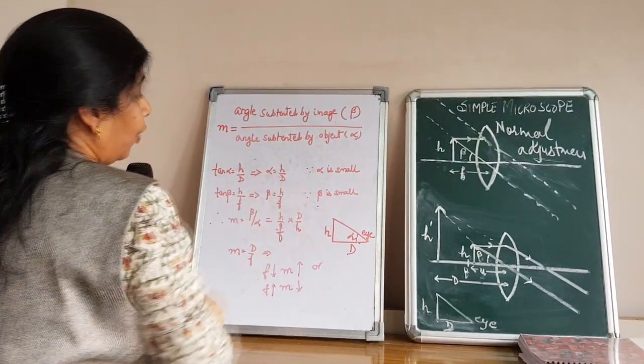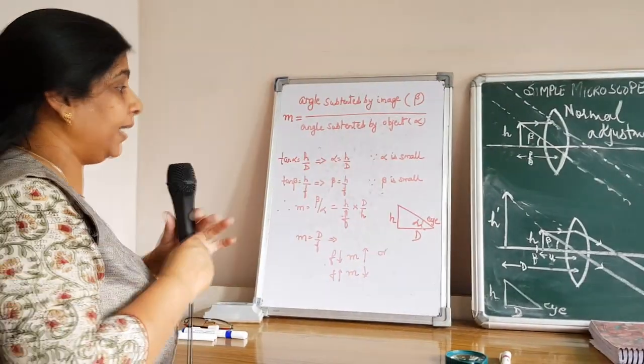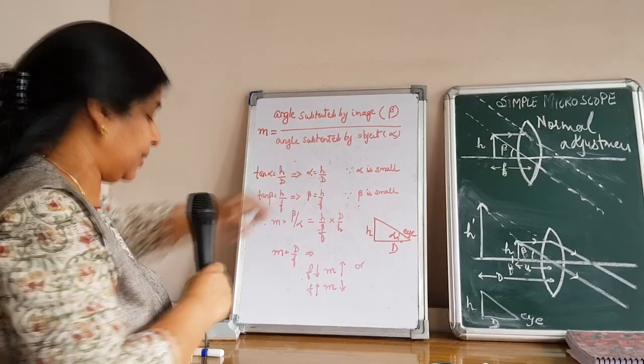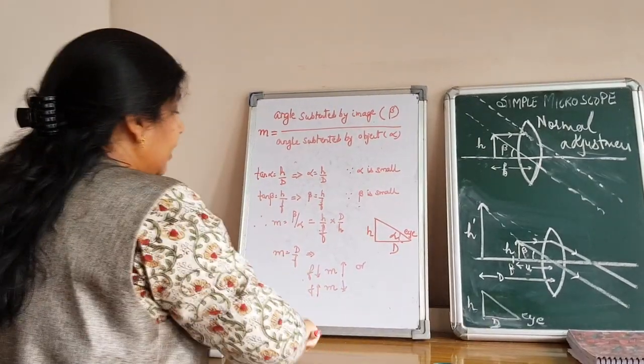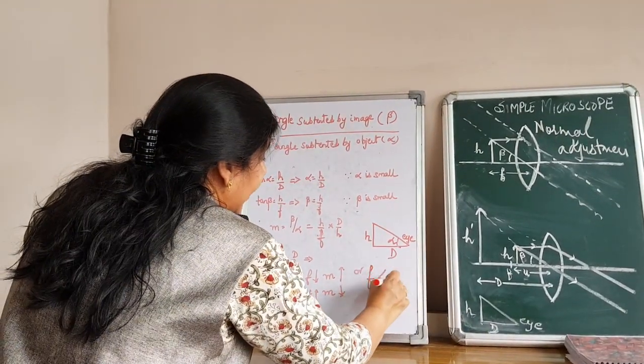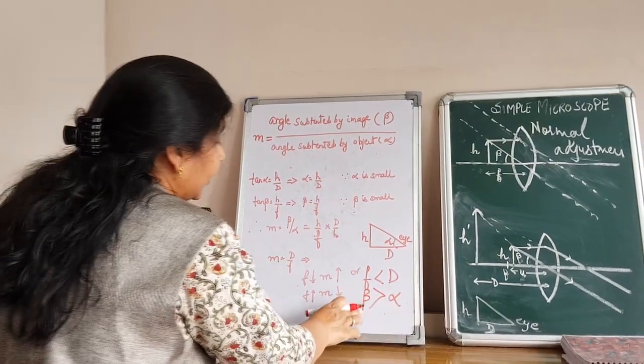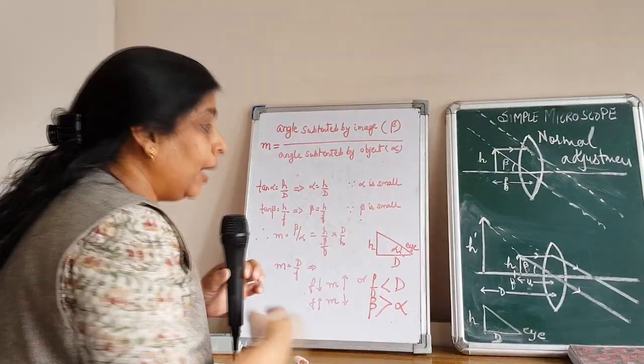We can easily judge from these two formulas that magnification has taken place because the focal length distance is less than this. When the focal length distance F is going to be less than D, beta is going to be more than alpha. That means magnification has taken place.